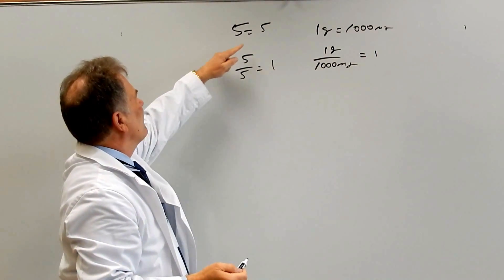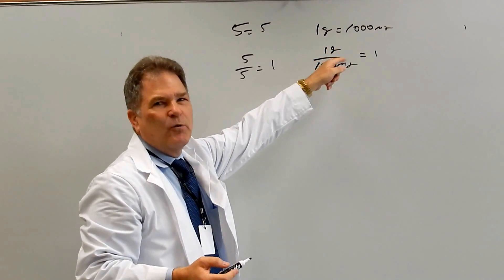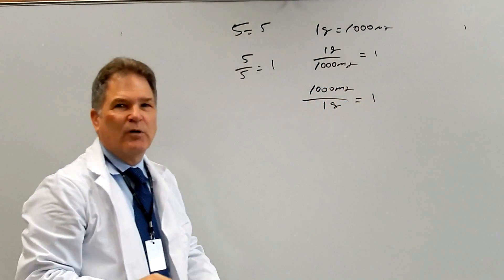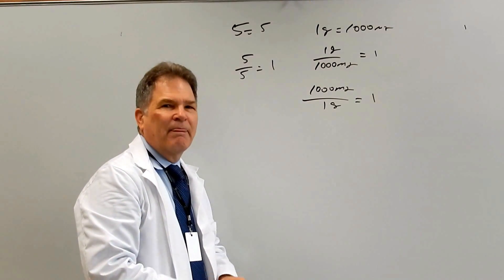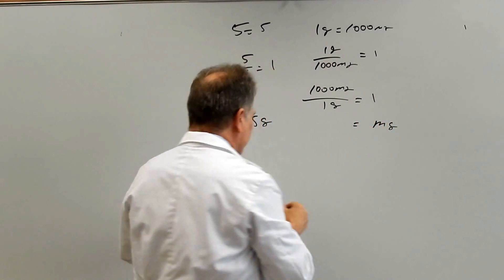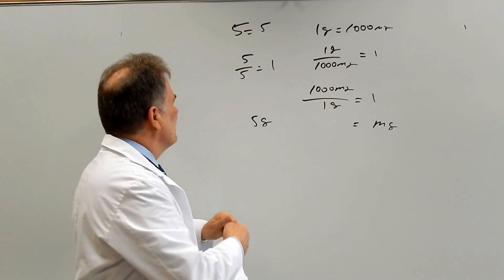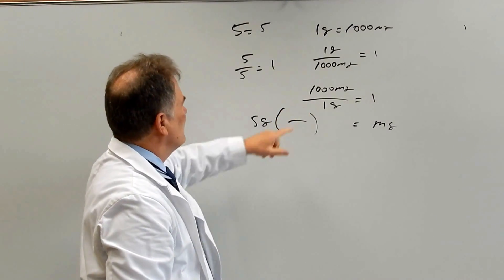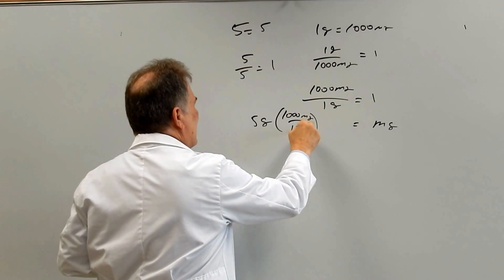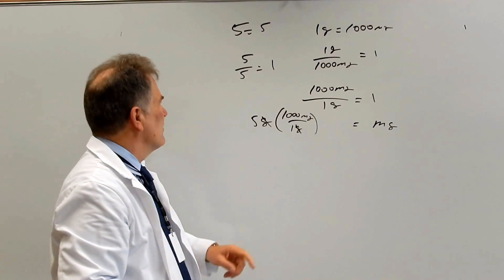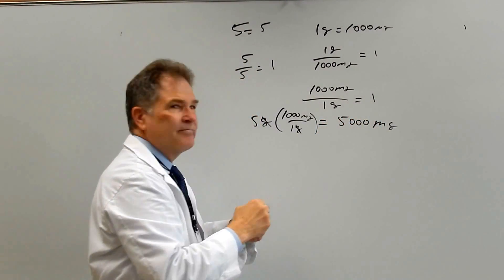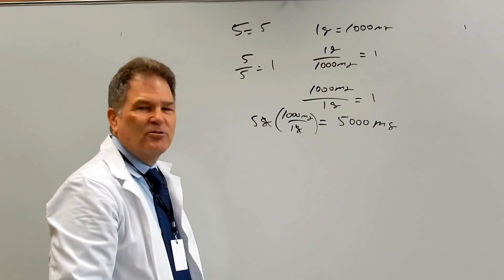We can take that 5 and put it on top — it doesn't make any difference. We can do the same thing with this equation: we can put a thousand milligrams on top and one gram on the bottom, and that will equal one. So for a simple conversion in the metric system, converting 5 grams into milligrams, we always write down the units of our answer and the given, then insert the ratio. We need milligrams on top and grams on the bottom so we end up with milligrams and cancel the grams. Five times a thousand divided by one gives us 5,000 milligrams.